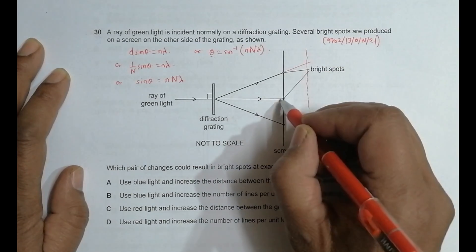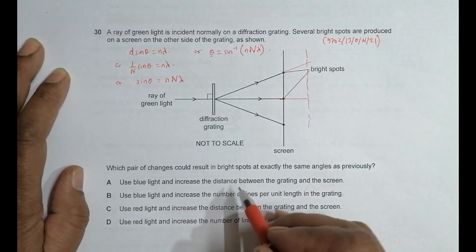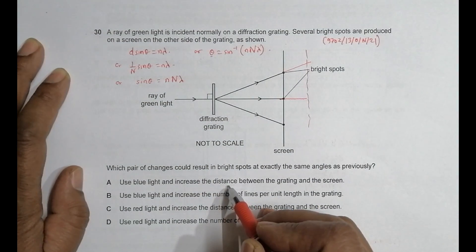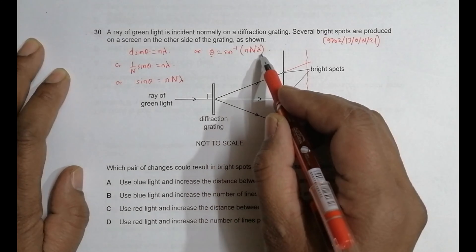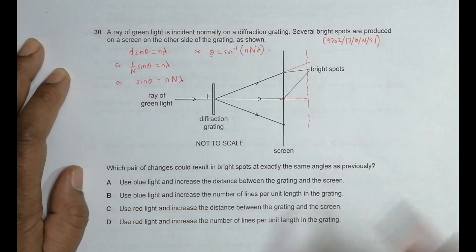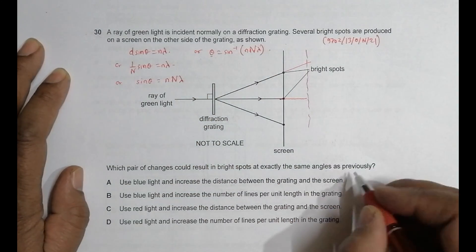So that's why this distance has no effect. If I use blue light lambda will decrease so theta will decrease. So here theta decreases.